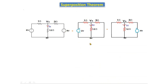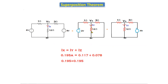Now we verify whether the superposition theorem holds. When both sources are present, ix equals 0.195 amperes. When only v1 is present, iy equals 0.117 amperes. When only v2 is present, iz equals 0.078 amperes. Adding iy plus iz gives 0.117 plus 0.078 equals 0.195 amperes. Since LHS equals RHS, ix equals iy plus iz, and hence the superposition theorem is verified.